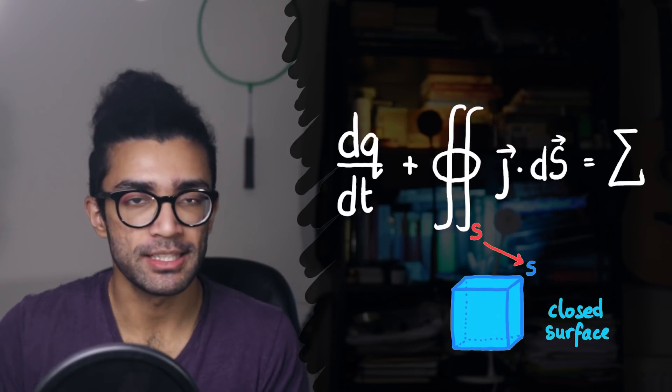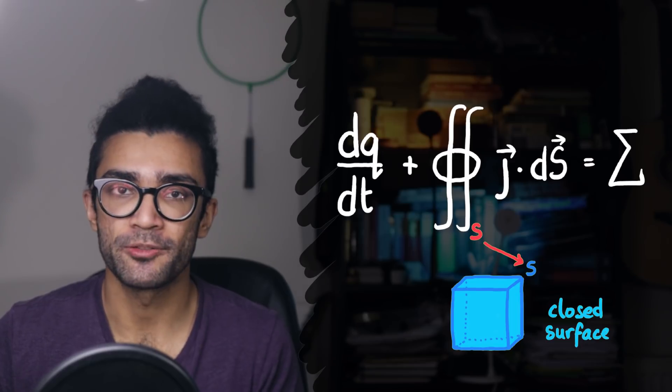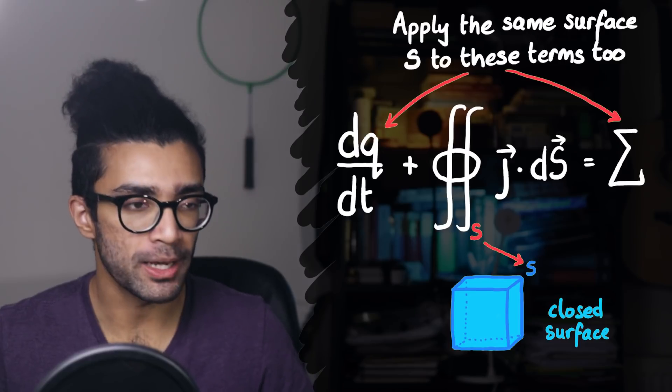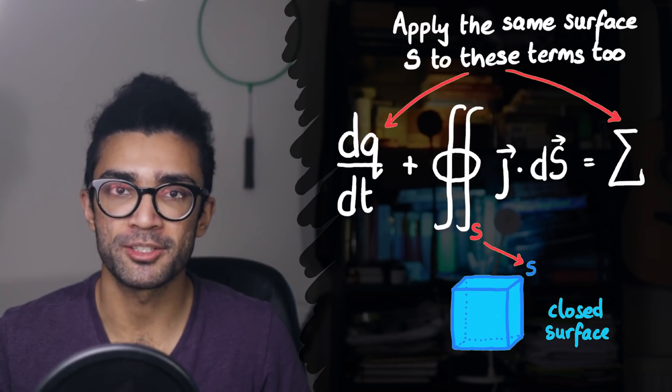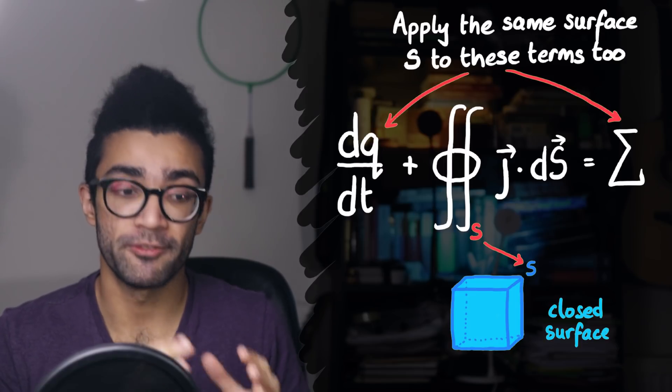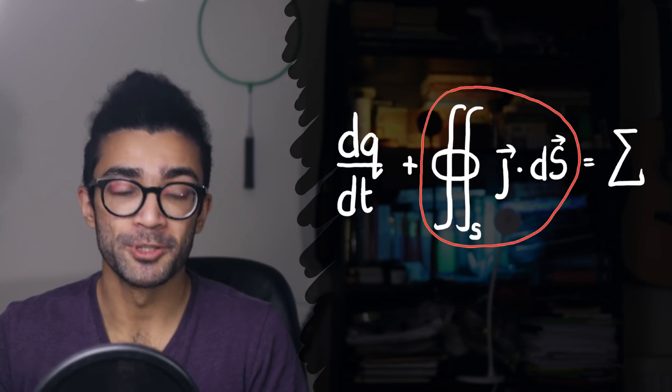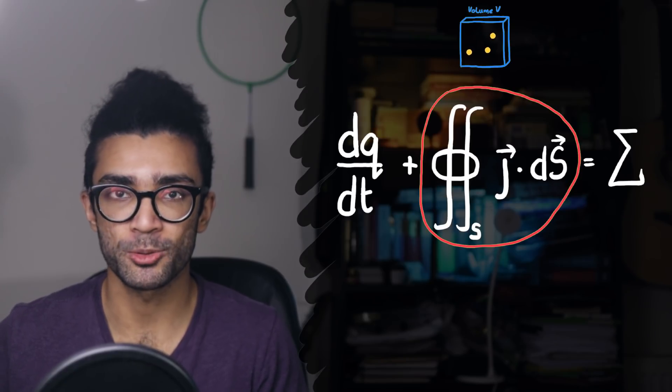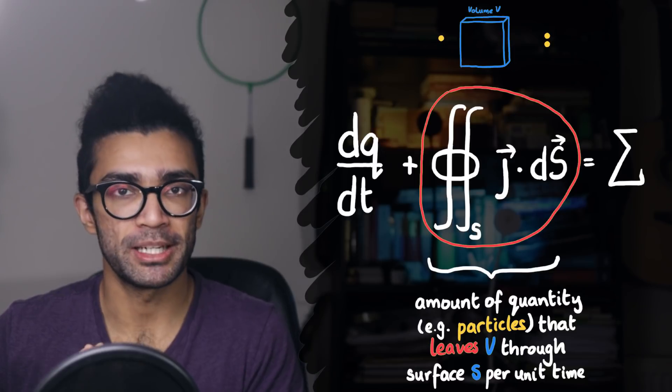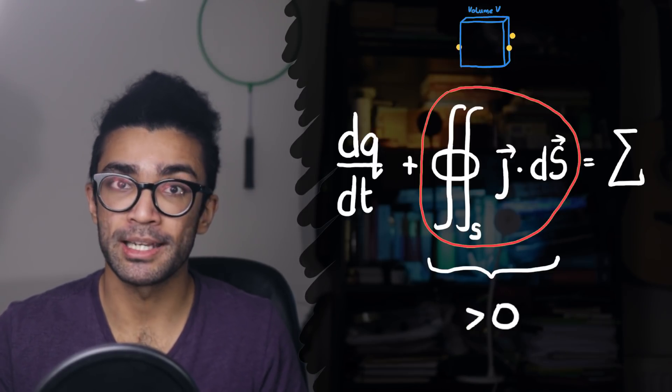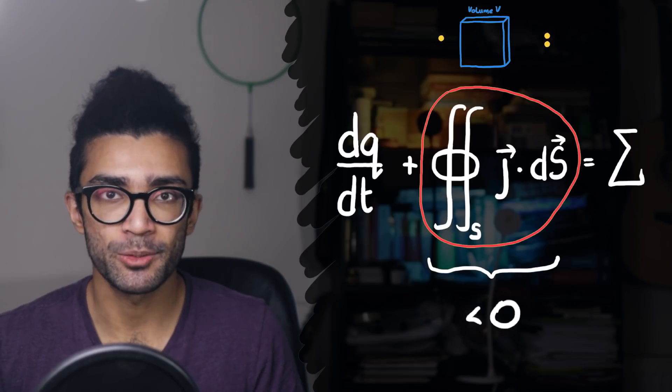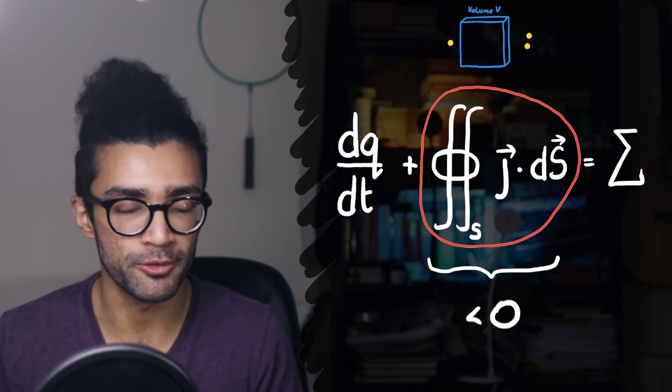Now, in reality, S doesn't have to be a cube. It can be any closed surface. But the important thing is that when we choose S for this particular term, we apply this same surface to the rest of the equation also. Lastly, it's worth noting that we could use a couple of different conventions for this term here, but the way that it's written, it's actually measuring the number of particles leaving our closed surface S. Basically, if this term ends up being positive, then we know that particles are leaving our volume through the surface S. And if it's negative, then we know that particles are entering our volume through the surface S.